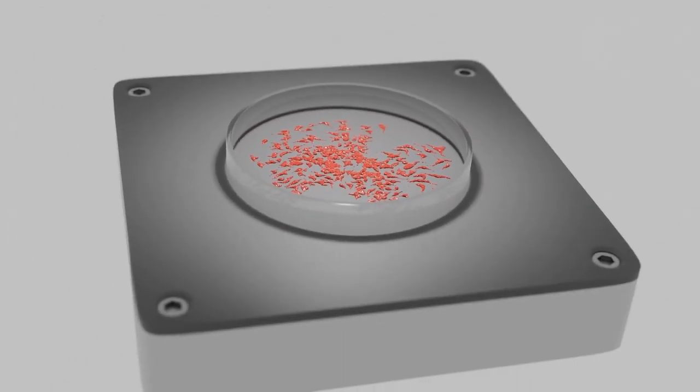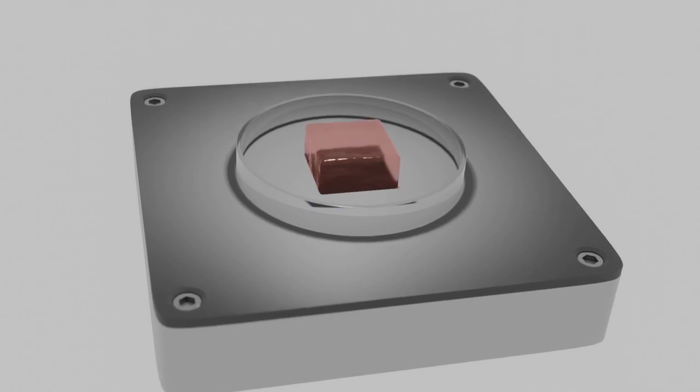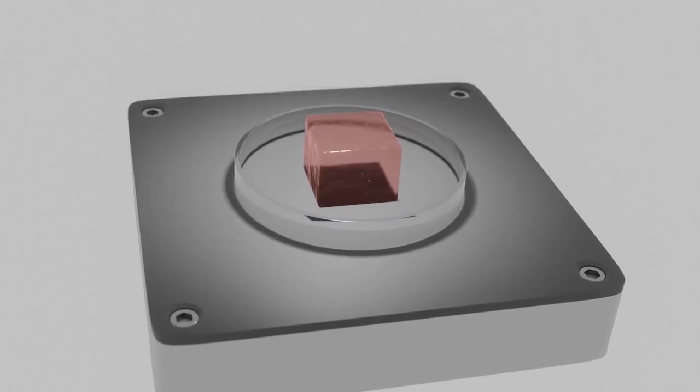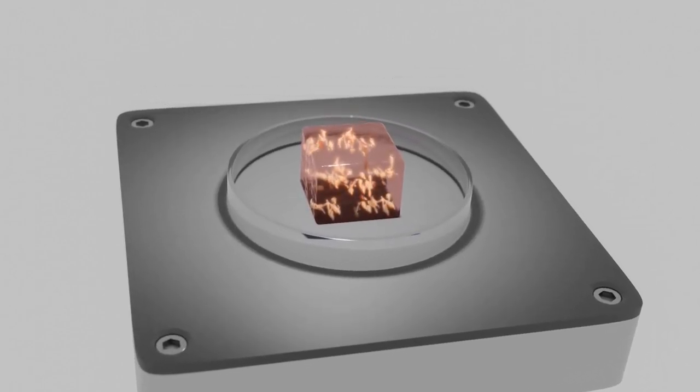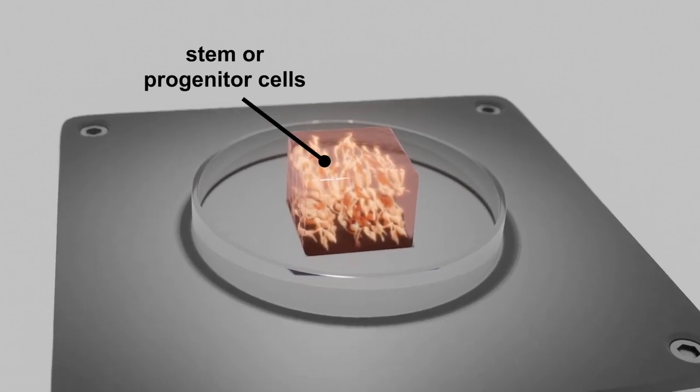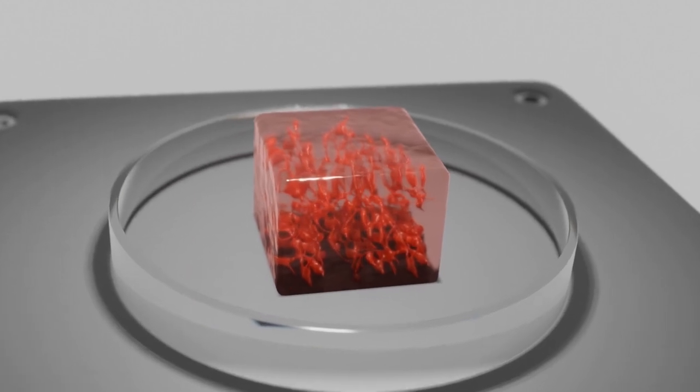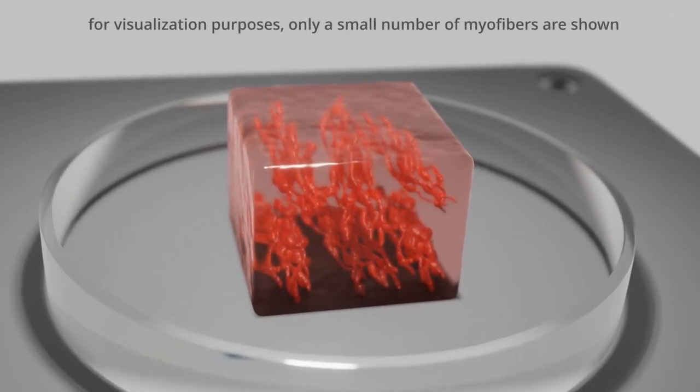However, these models are limited in size and do not properly mimic native tissue architecture. Tissue models in three dimensions can be obtained by culturing stem cells in hydrogels. To engineer skeletal muscle tissue, we need to induce differentiation from these stem cells into muscle cells and have them form myotubes and myofibers.